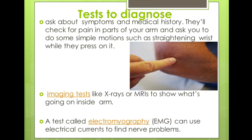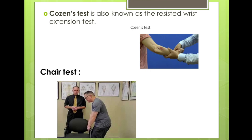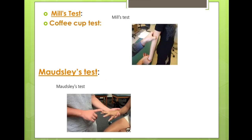How do we diagnose tennis elbow? First and foremost, we collect the medical history and occupational history. Then imaging studies like X-rays, MRI, and electromyography are done to help diagnose the disease. Other diagnostic tests include the Cozen's test, chair test, Mill's test, coffee cup test, and Maudsley's test.